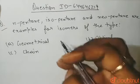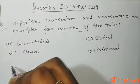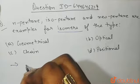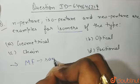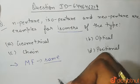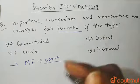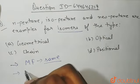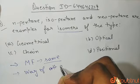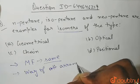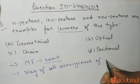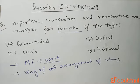So first of all we should know what isomers are. Isomers are compounds that contain exactly the same number of atoms — that is, their molecular formula is the same — but they differ from each other in the way the atoms are arranged, or you can say the way of attachment.